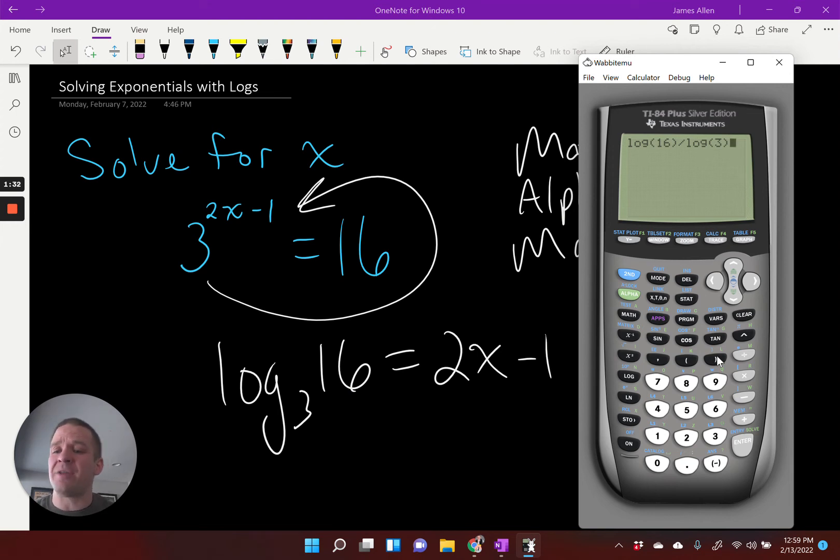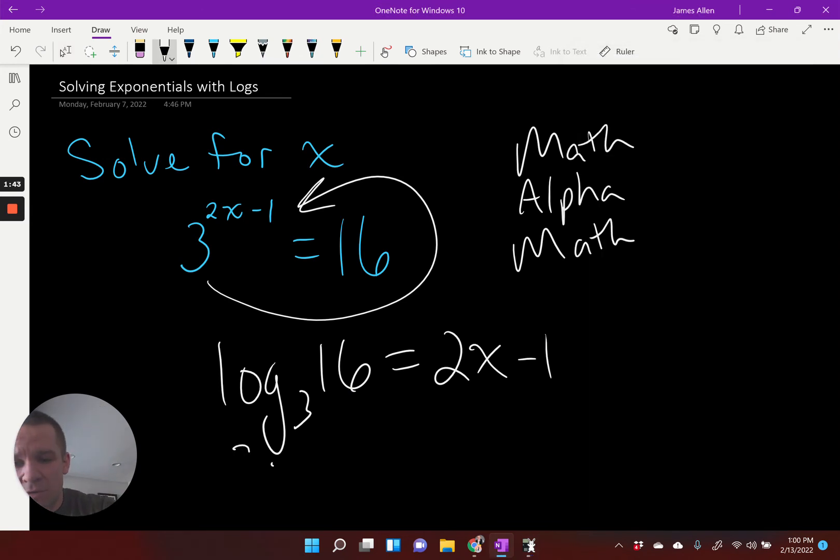So if your calculator has math, alpha, math, and a nice log base, and an open argument comes up for you, you can just type it in with the three and the 16 in those boxes, and you're good to go. We will get the same answer, which is 2.5237 and it goes on. And I got 2x minus one here.